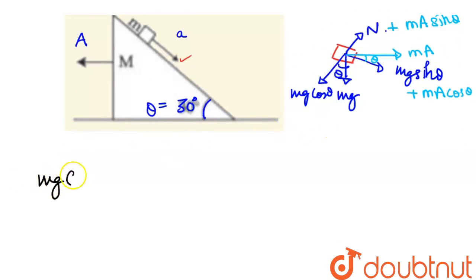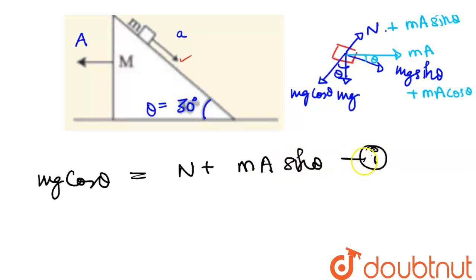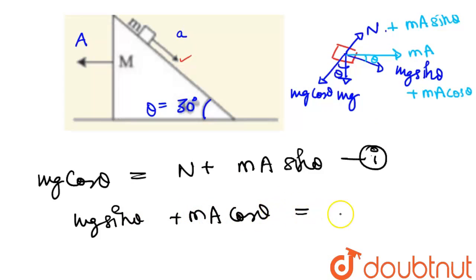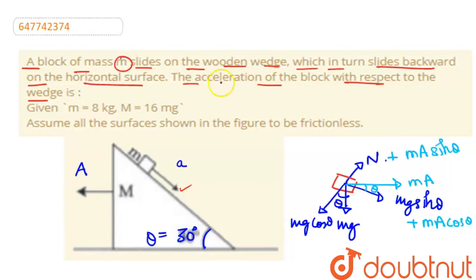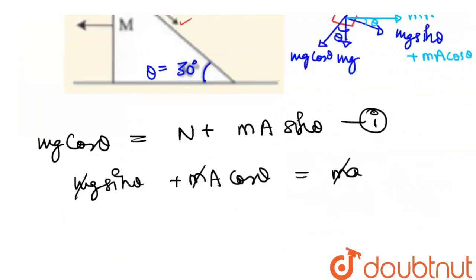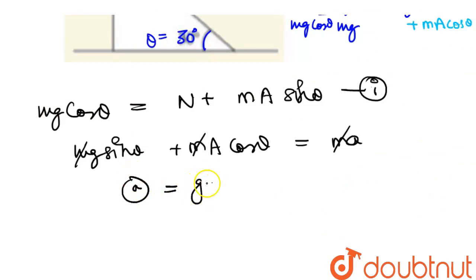First we write: m·g cos theta, a cos theta, plus m·a sin theta. This is our first equation. Then: m·g sin theta plus m·a cos theta. Simplifying m·a cos theta terms. This gives us the acceleration of the block: a = g sin theta plus capital A cos theta.